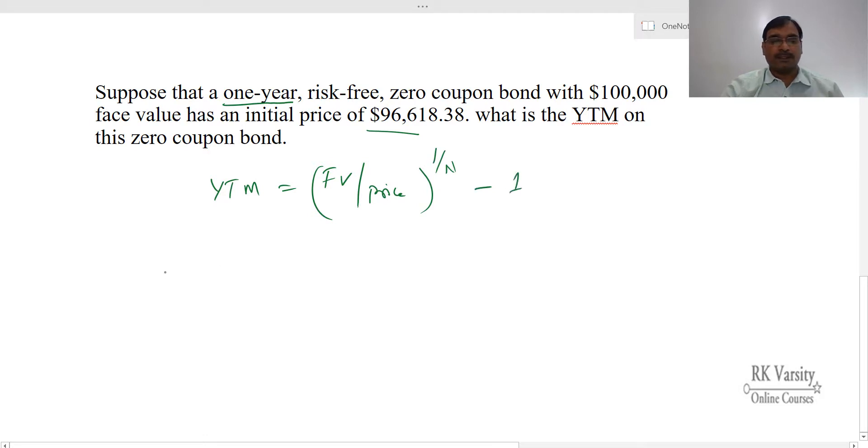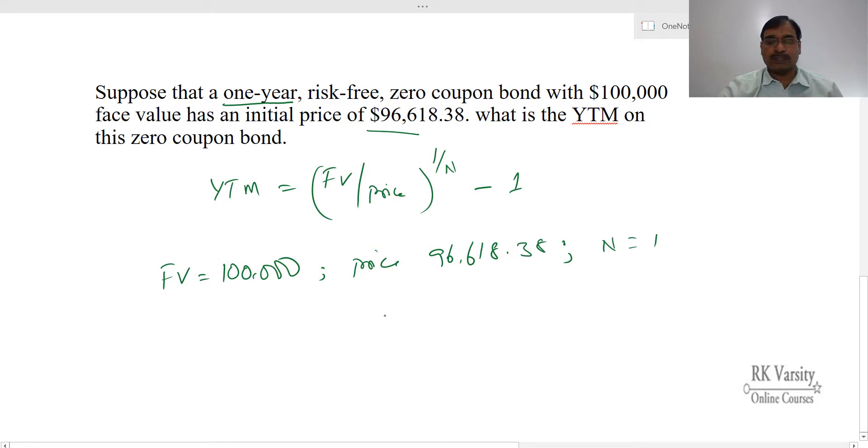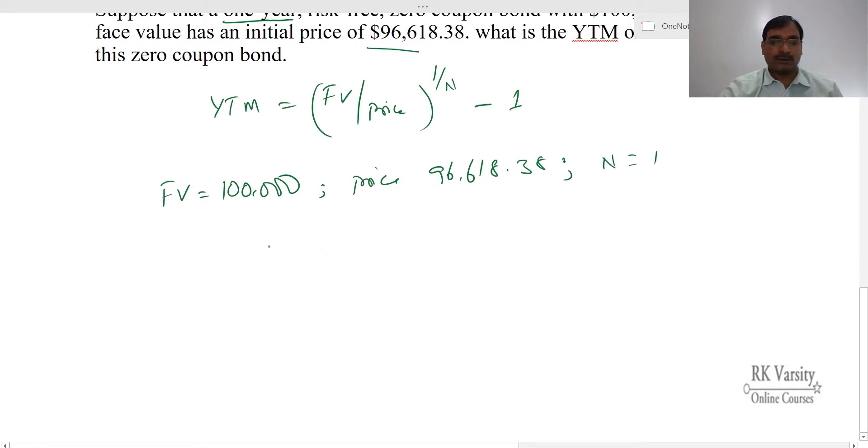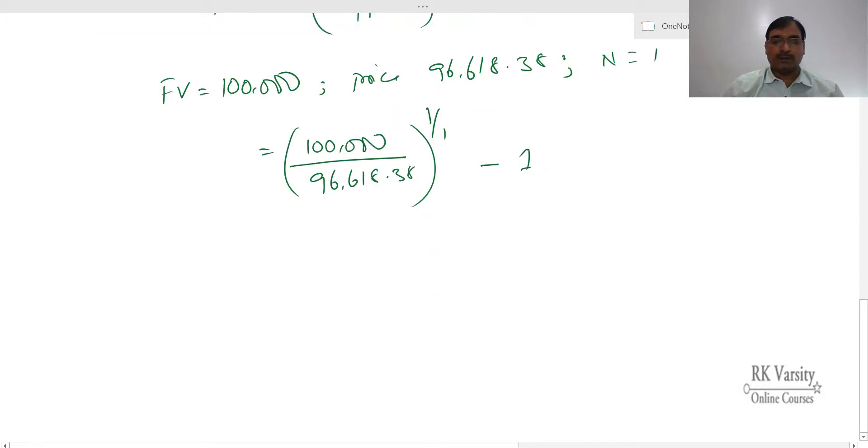So here our face value is $100,000, price is $96,618.38, and N equals 1. So this gives us 100,000 upon 96,618.38, raised to the power of 1 upon 1, minus 1. So we do the calculation here.